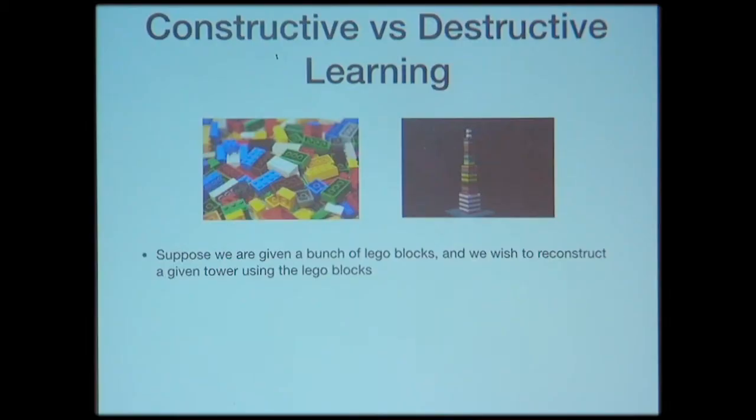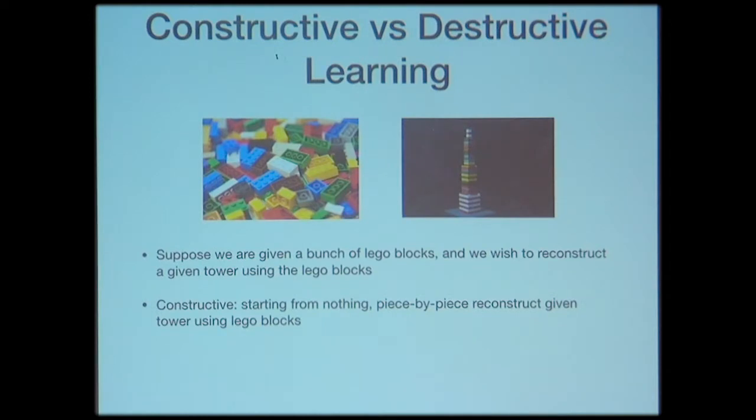You start from nothing and slowly construct the given structure. On the other hand, you may think about a destructive approach — what children might do — where you look at the tower and dismantle it piece by piece. But if you make a note of what and how you have dismantled, at the end of the process you have enough information to reconstruct back the tower. This is what we call destructive learning.